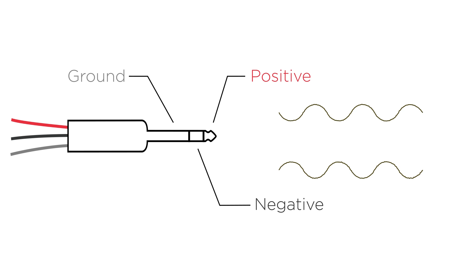Both leads will pick up interference, but since the negative is opposite polarity of the positive, the interference will be cancelled out. The ground serves as extra protection from unwanted interference.